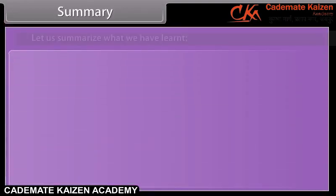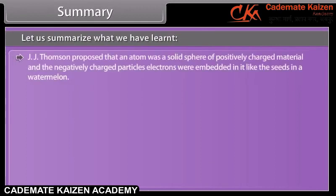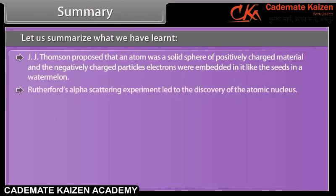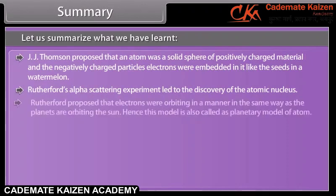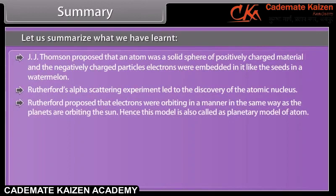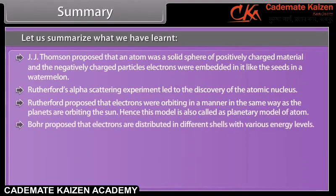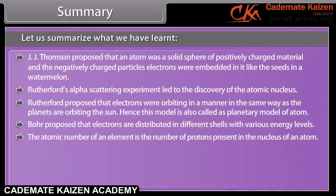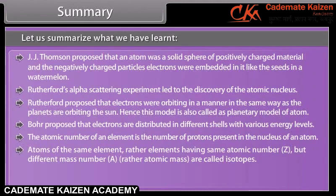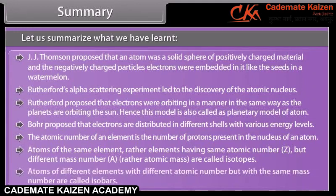Summary. J.J. Thomson proposed that an atom was a solid sphere of positively charged material, and the negatively charged electrons were embedded in it like the seeds in a watermelon. Rutherford's alpha scattering experiment led to the discovery of the atomic nucleus, and he proposed the planetary model of the atom. Bohr proposed that electrons are distributed in different shells with various energy levels. The atomic number of an element is the number of protons in the nucleus. Atoms of the same element with the same atomic number Z but different mass number A are called isotopes. Atoms of different elements with different atomic numbers but the same mass number are called isobars.